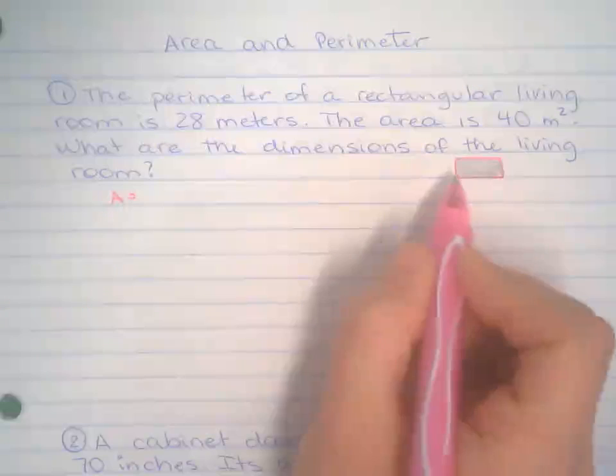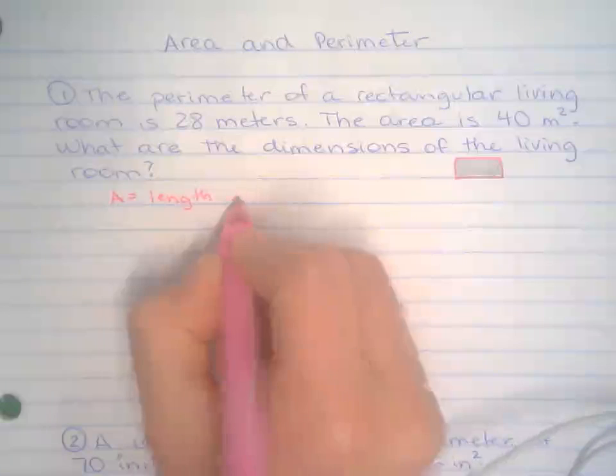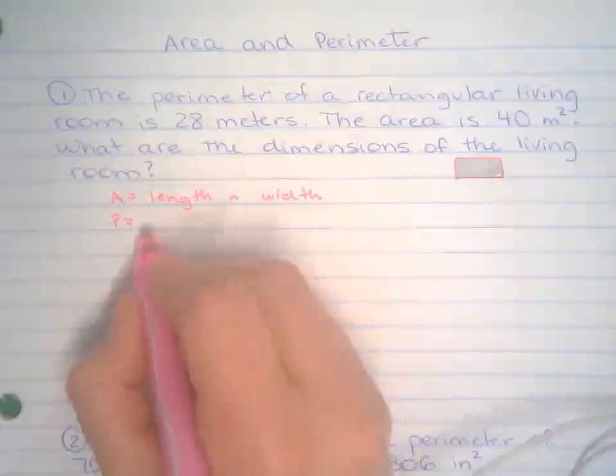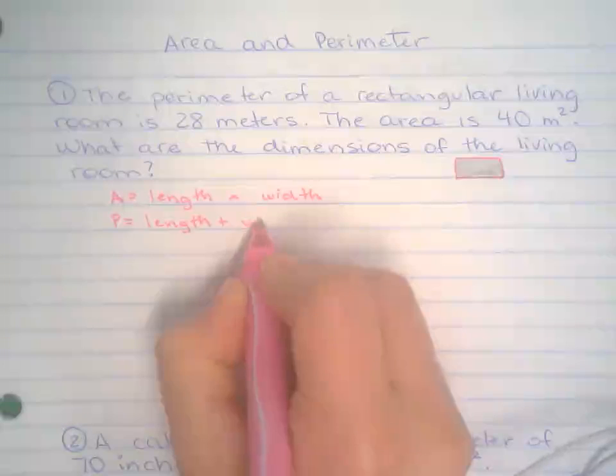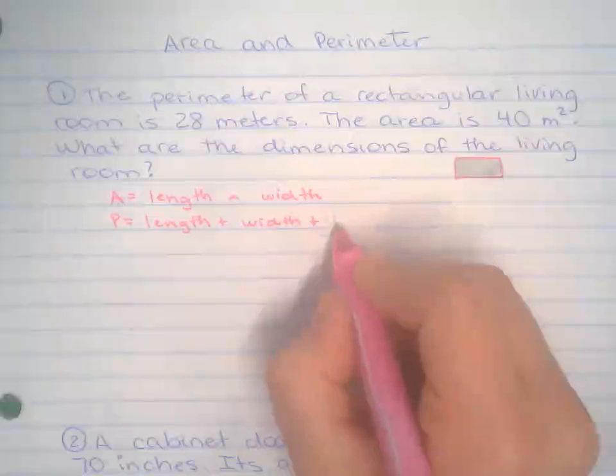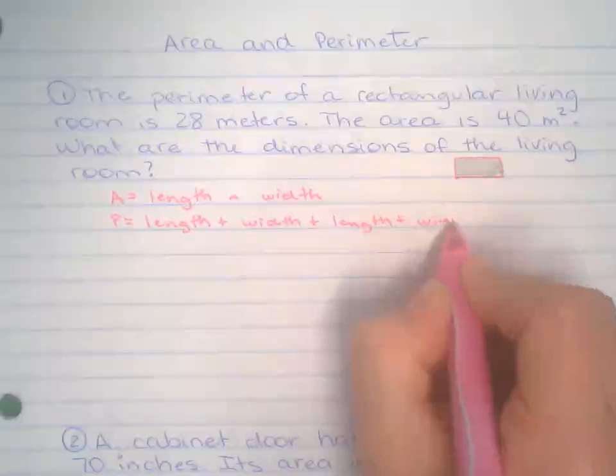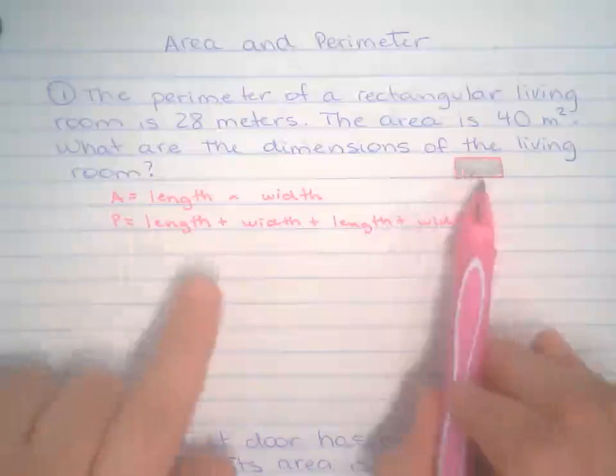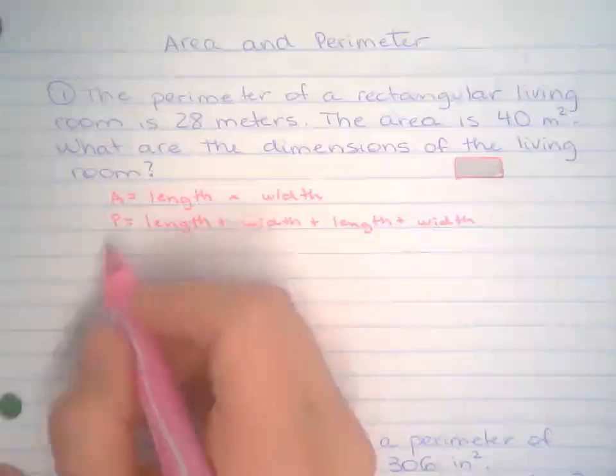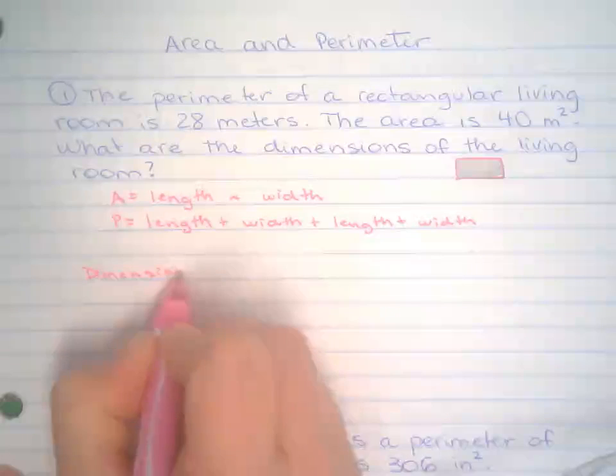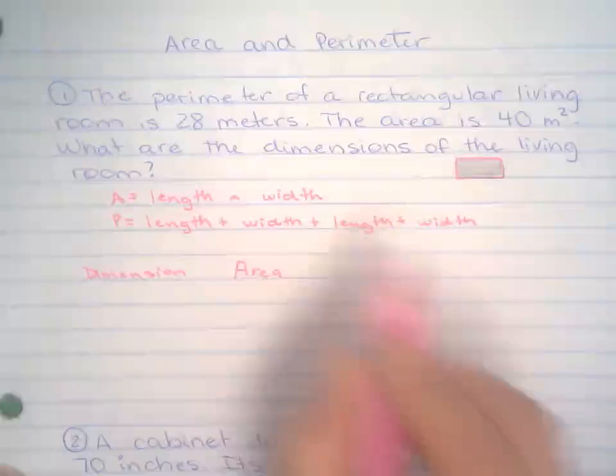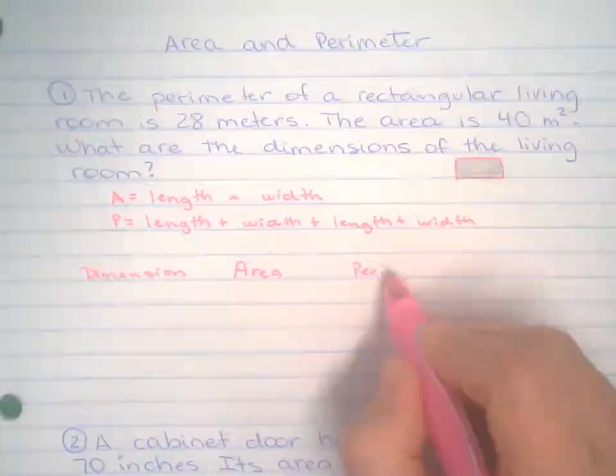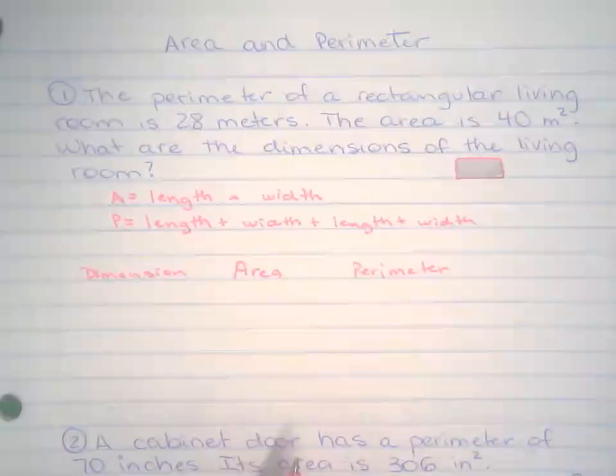Area of a rectangle, you know it's length times width, and you also know the perimeter of a rectangle is the length plus the width plus the other length plus the width. So length, width, length, width. So this plus this plus this plus this. When you're looking for the dimensions, you have to find those dimensions that the area and the perimeter would match with what the question is giving you.